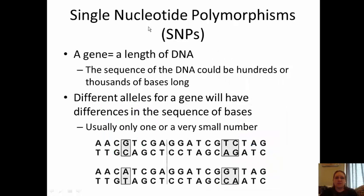We also have the idea of a single nucleotide polymorphism, called a SNP. A gene is a length of DNA whose sequence could be hundreds or thousands of bases long. Different alleles for a gene will have differences in the sequence of their bases, usually only one letter or a very small number of letters. Here you can see two alleles — two sections of DNA — where instead of a GC in one allele, there's an AT combination, along with two other small changes. This small number of differences in the base sequence is called a SNP.